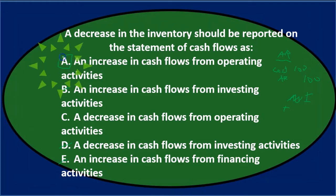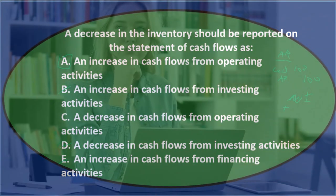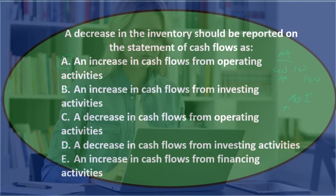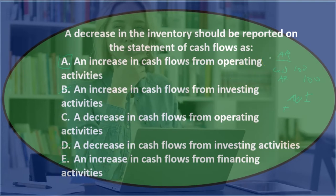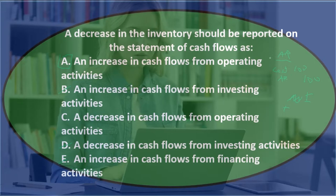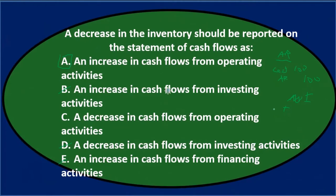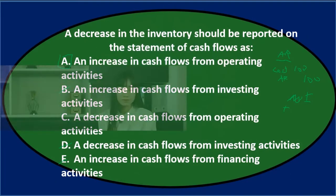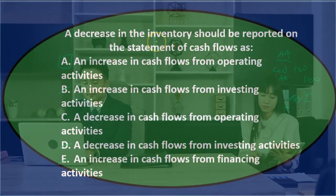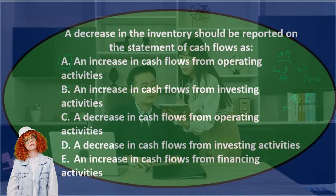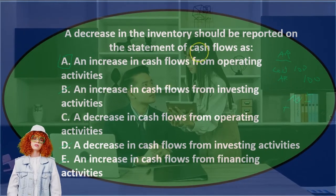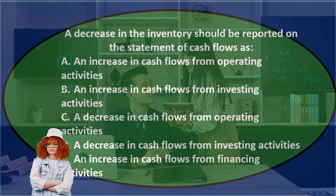So the answer is: an increase in cash flows from operating activities. The rule is: if an asset goes down, we increase the cash flow statement; the opposite applies to liabilities — if liabilities go down, we decrease the cash flow statement. It's useful to think through accounts receivable as your example, then apply the reverse rule to liabilities using accounts payable as your example.